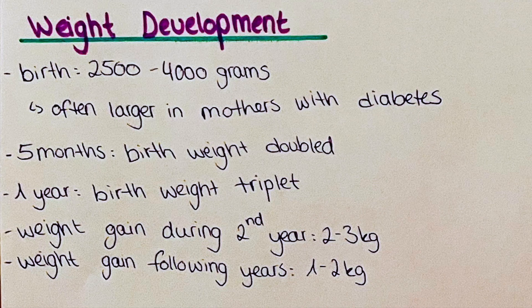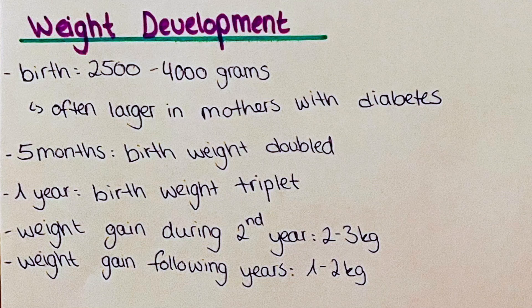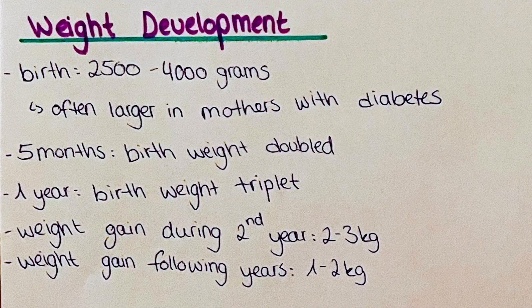Weight gain during the second year is around 2 to 3 kilos for that whole second year in total. Then the following years, the child gains around 1 to 2 kilograms.